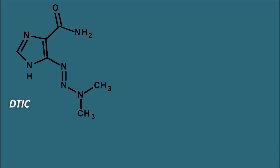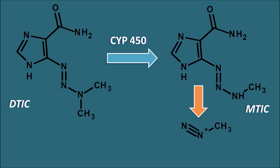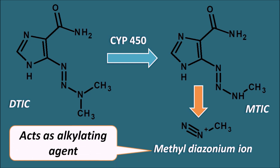This drug acts as a prodrug. When given into the body, it undergoes metabolism by liver cytochrome P450 enzymes, removing one methyl group through N-demethylation. This produces N-monomethyltriazeno imidazole carboxamide, and after removal of the methyl group, the triazeno linkage is cleaved, releasing a methyl diazonium ion. This diazonium ion acts as an alkylating agent, producing cross-linkage between DNA strands. So dacarbazine acts as an alkylating agent as a prodrug, metabolized by liver CYP450 enzymes to release methyl diazonium ions.